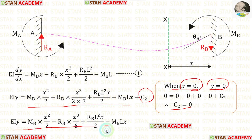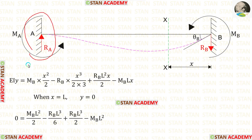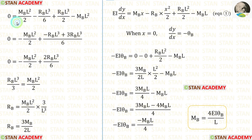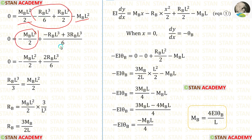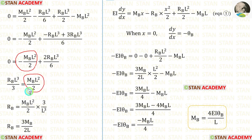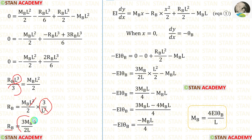At point A there is a fixed support, and in a fixed support there will be no deflection. So when X = L, Y = 0. Applying X = L and Y = 0 to the deflection equation, we can add the resulting terms, taking LCM with 6 as common. After adding, we get 2RB·L³. Rearranging and cancelling L² terms, finally for RB we get 3MB / 2L.